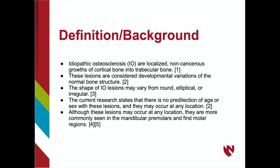Idiopathic osteosclerosis, also known as enostosis and dense bone islands, is defined as localized, non-cancerous growths of cortical bone into trabecular bone. These lesions are developmental variations in the normal bone structure, as opposed to acquired variations.